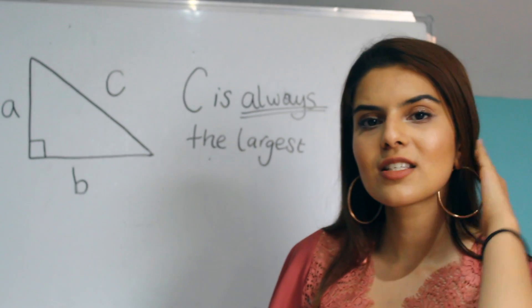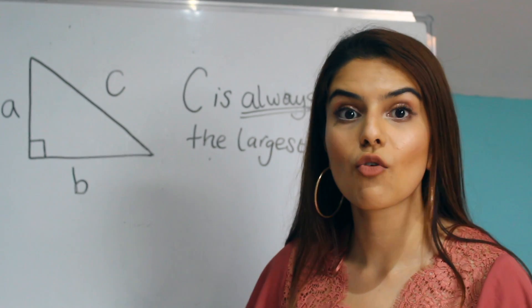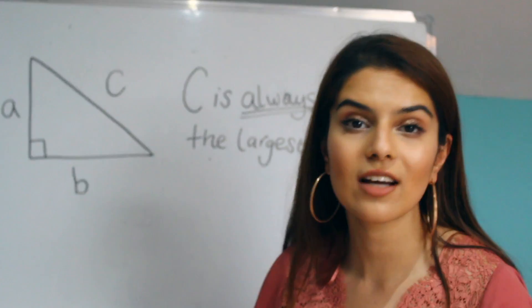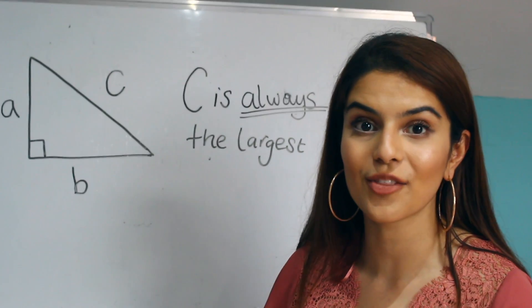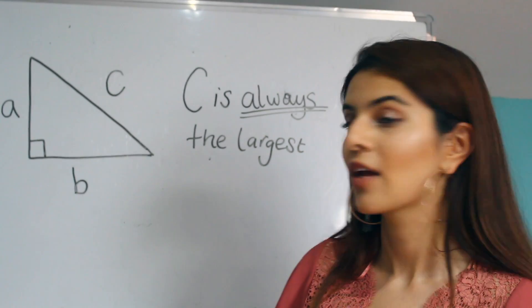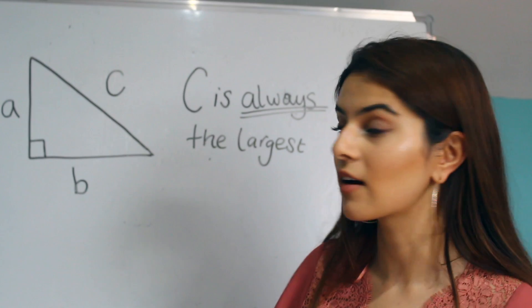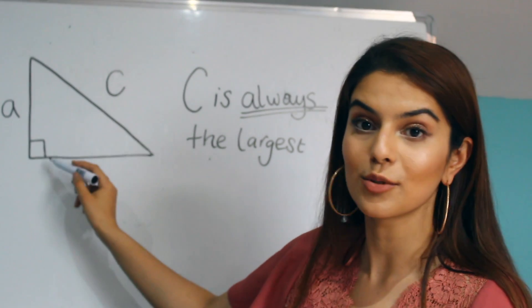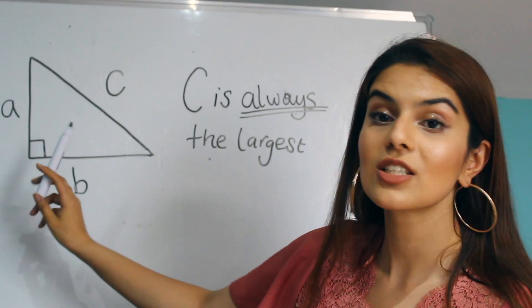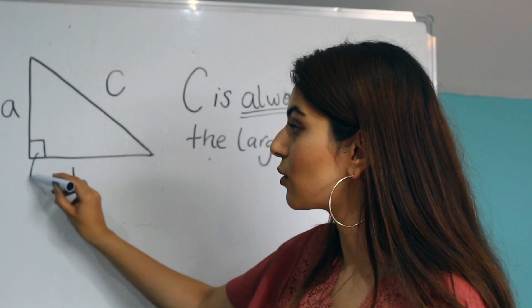So the Pythagoras' Theorem is all to do with right angle triangles. A right angle triangle is just a triangle that has a 90 degree angle, which is usually expressed by this square symbol here. So this would be our 90 degree angle.